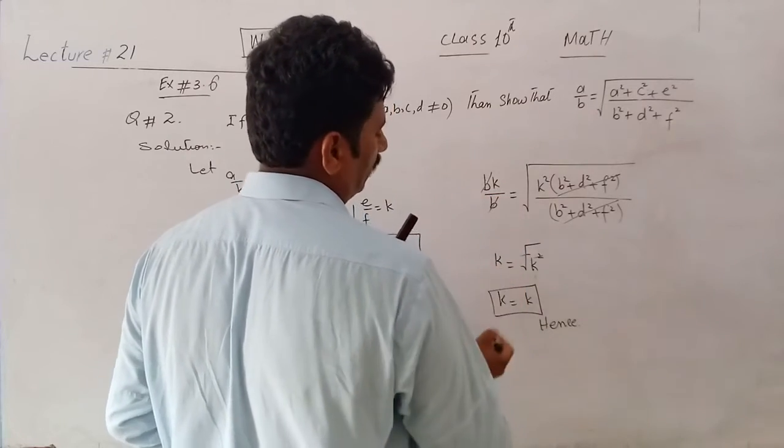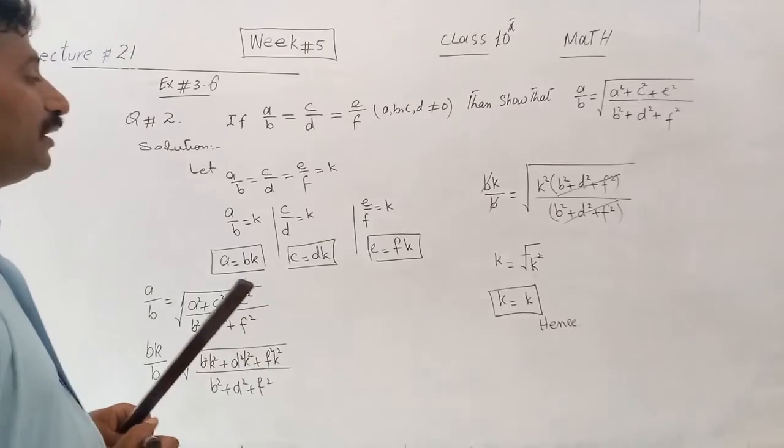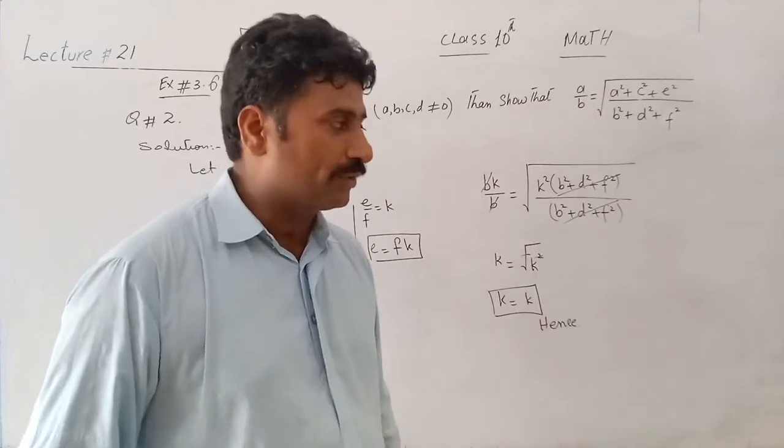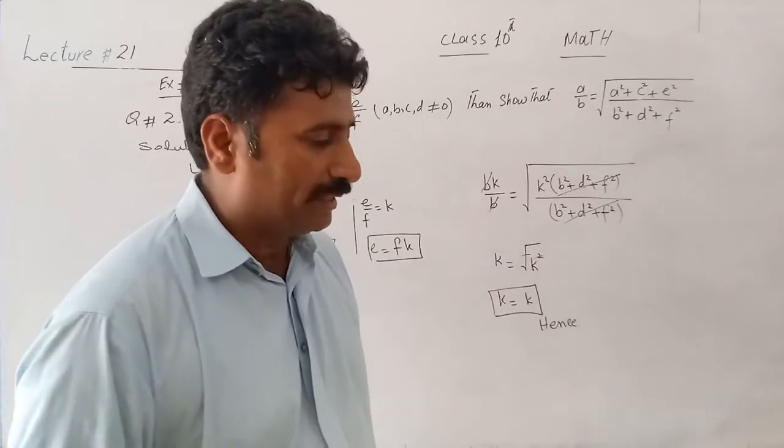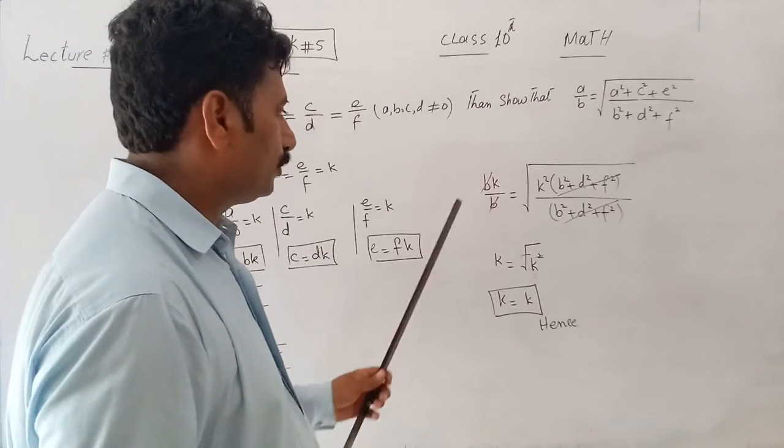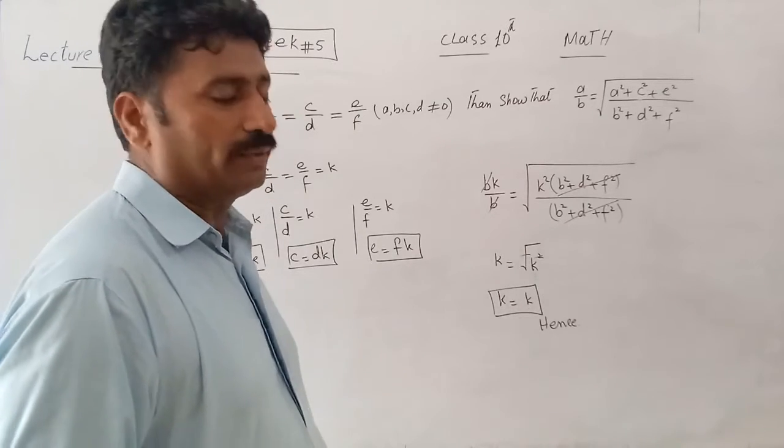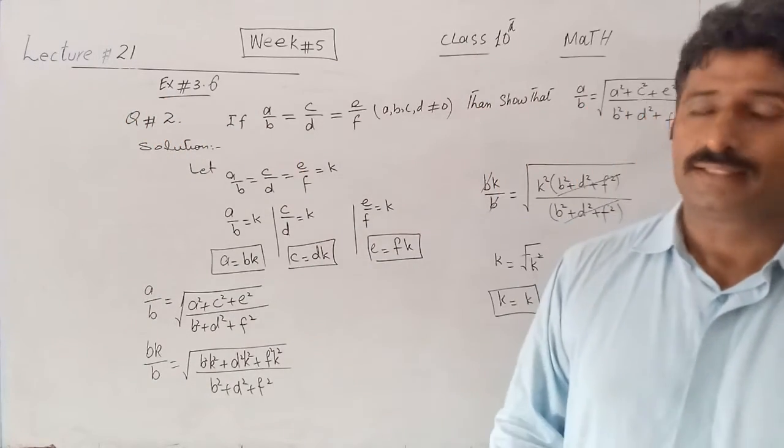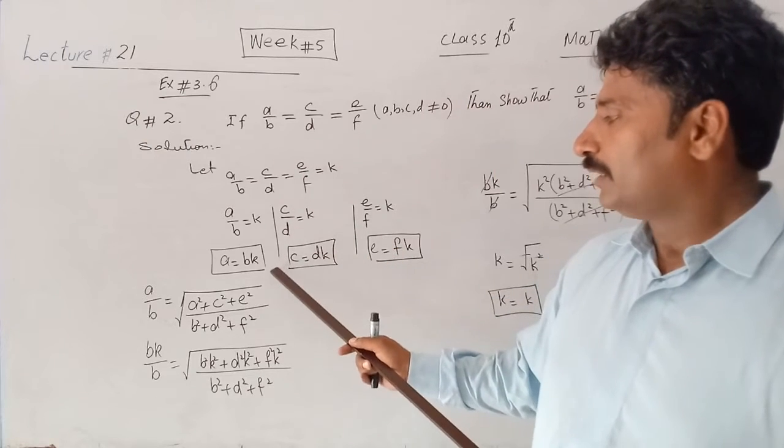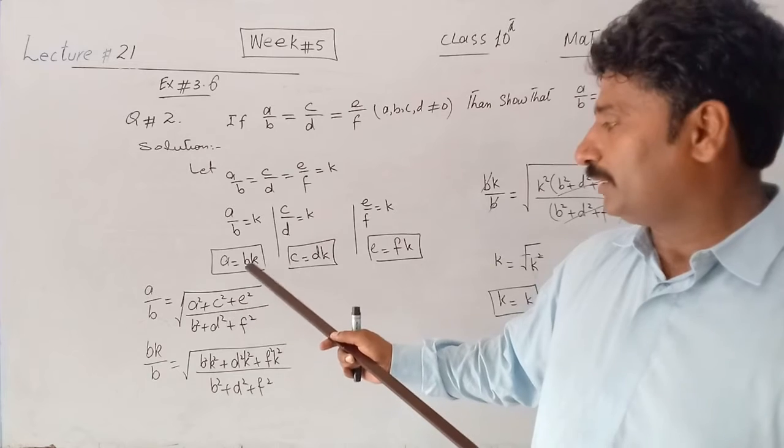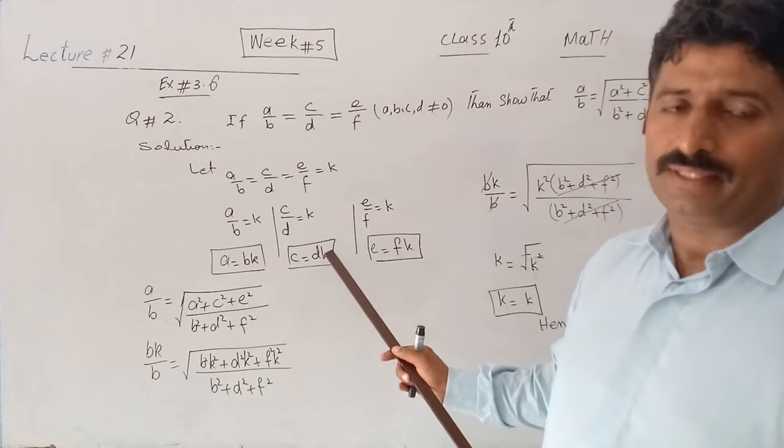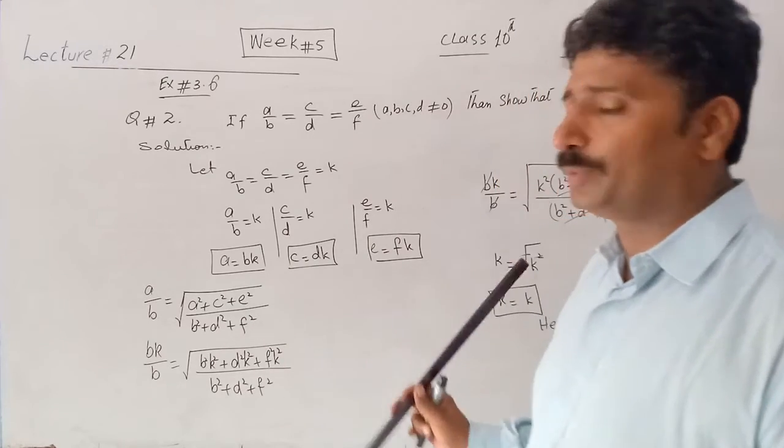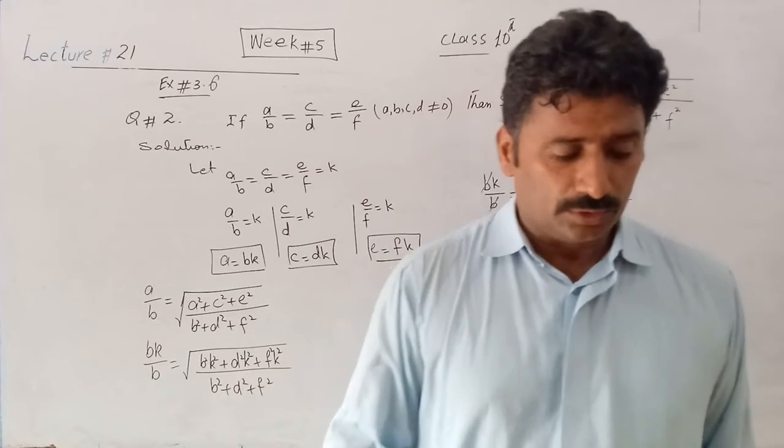We will take value here, and cancel the K. Basically, we will have to prove that the balance is equal or not. We have seen that the balance is equal.